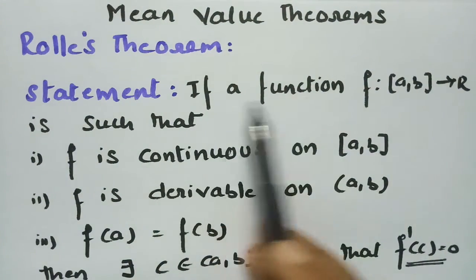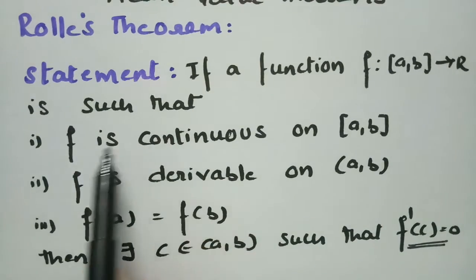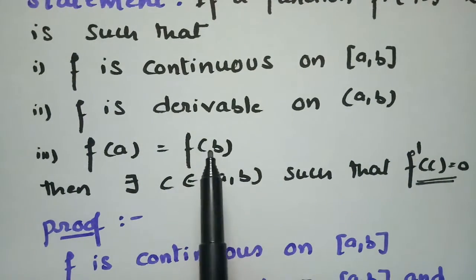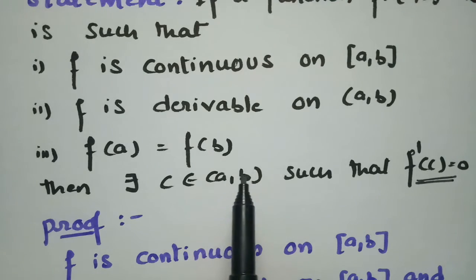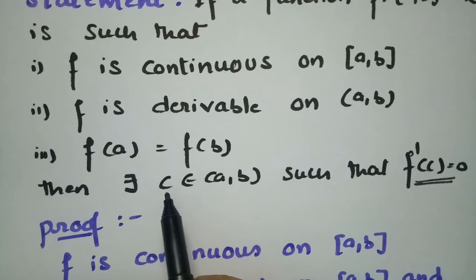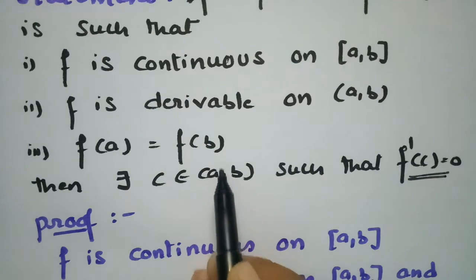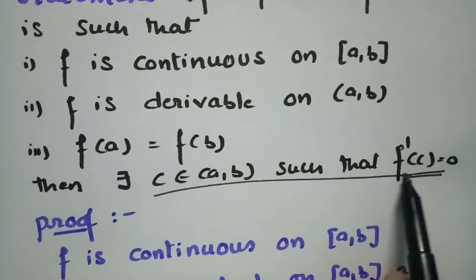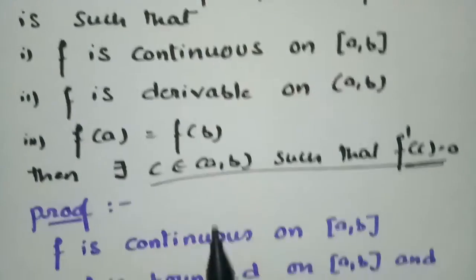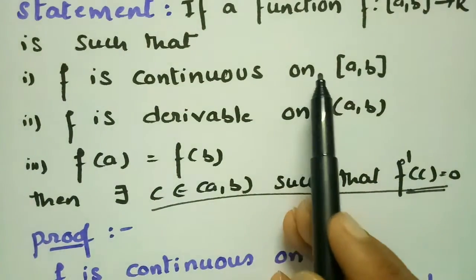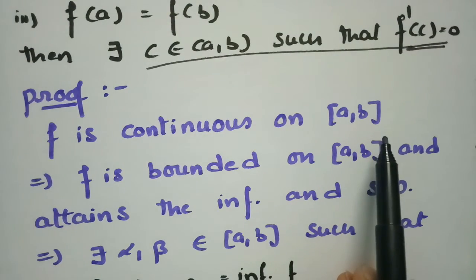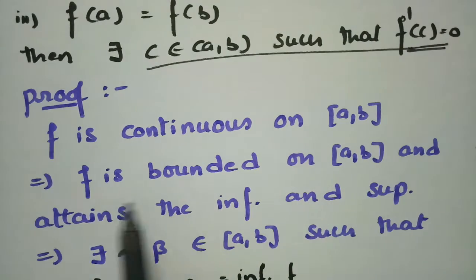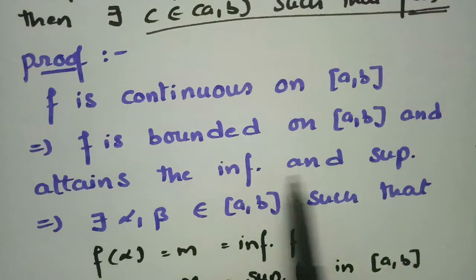To recap: the statement of Rolle's theorem says if f maps from closed [a,b] to R with f continuous on [a,b], f derivable on open (a,b), and f(a) = f(b), then we must prove there exists a point c in open (a,b) such that f'(c) = 0. These three conditions are given, and we must prove the existence of such a c.